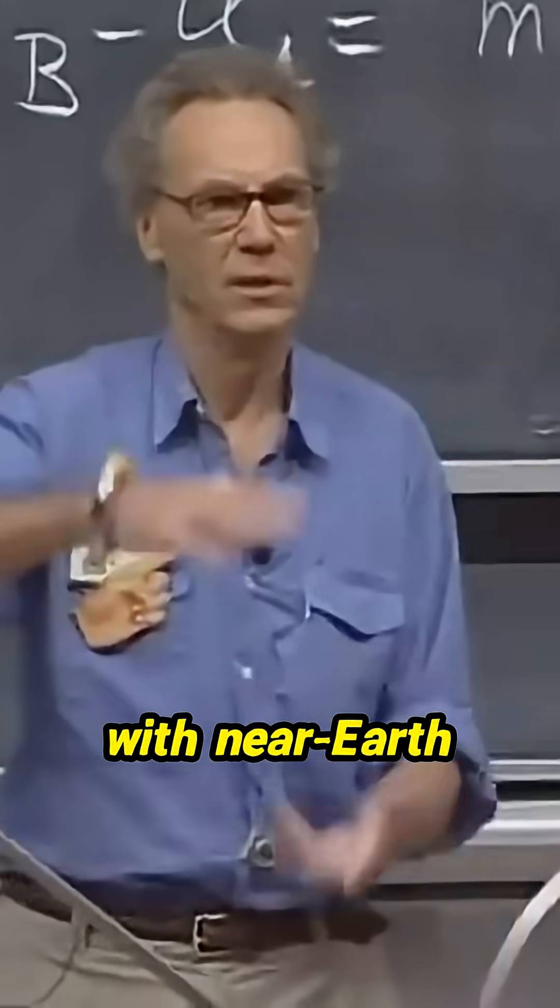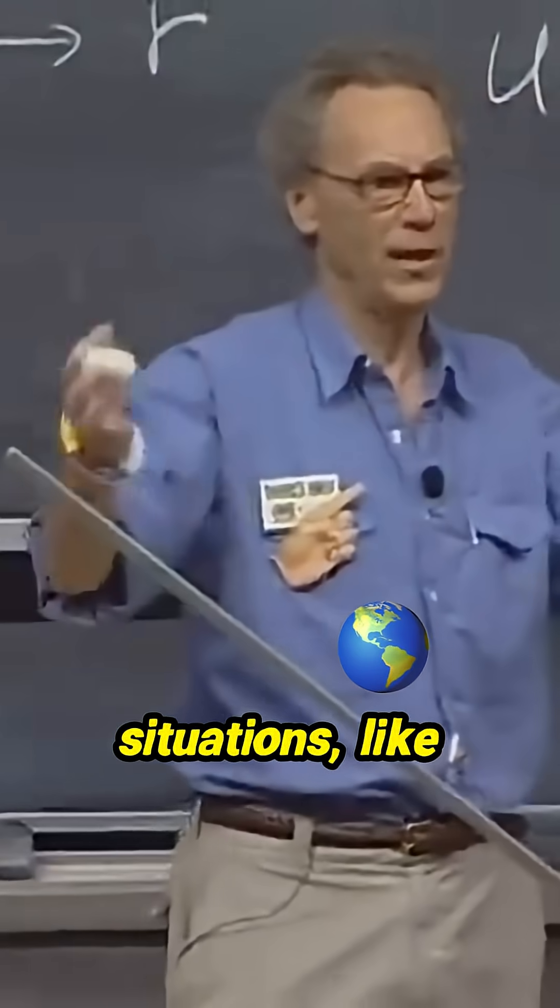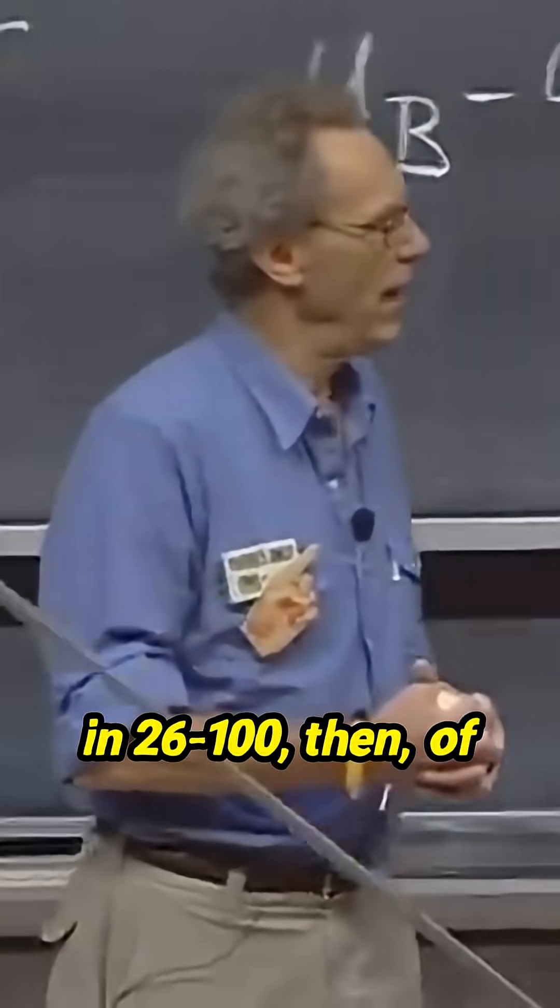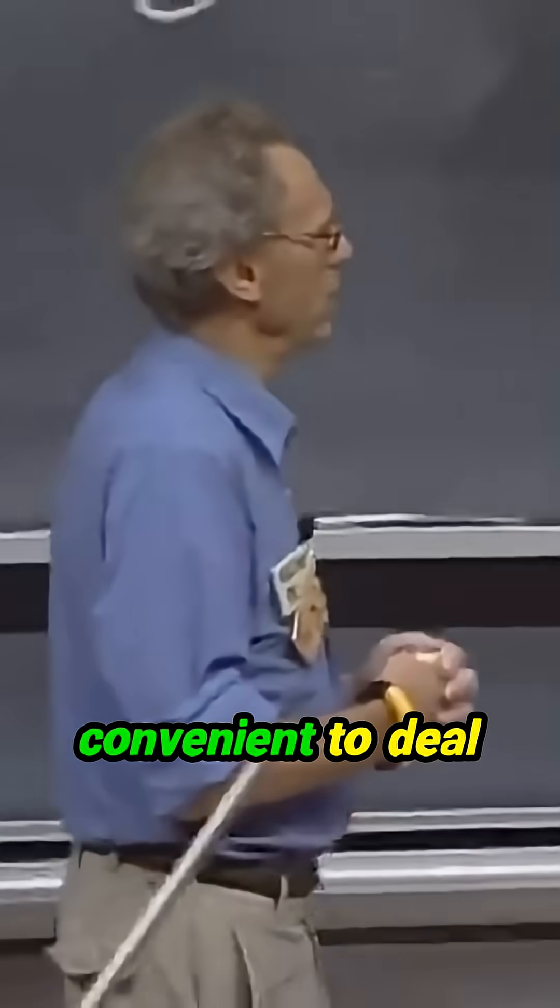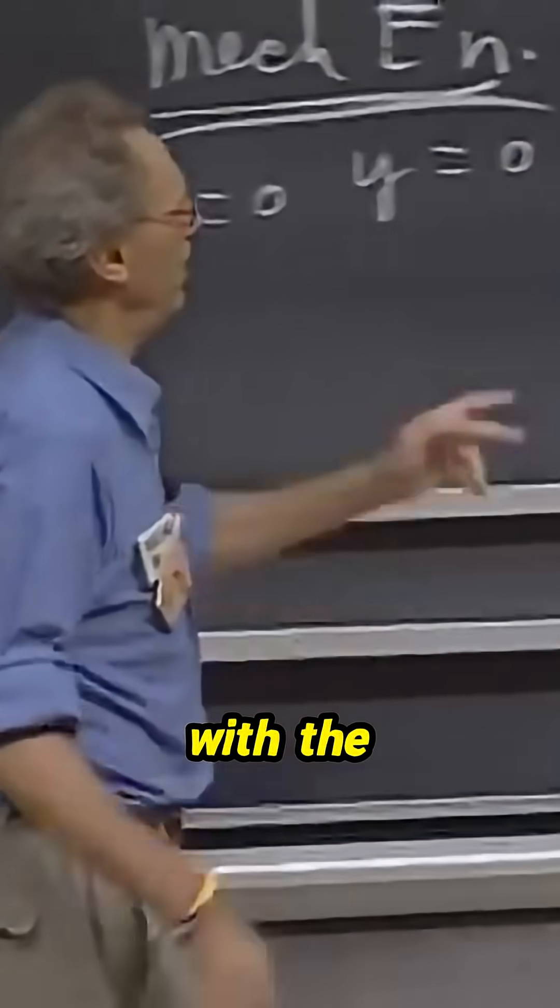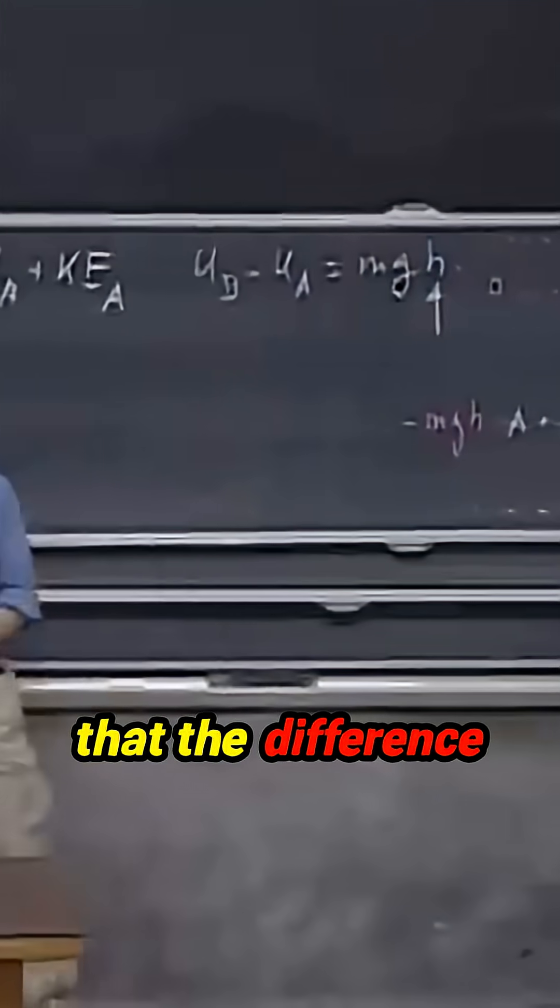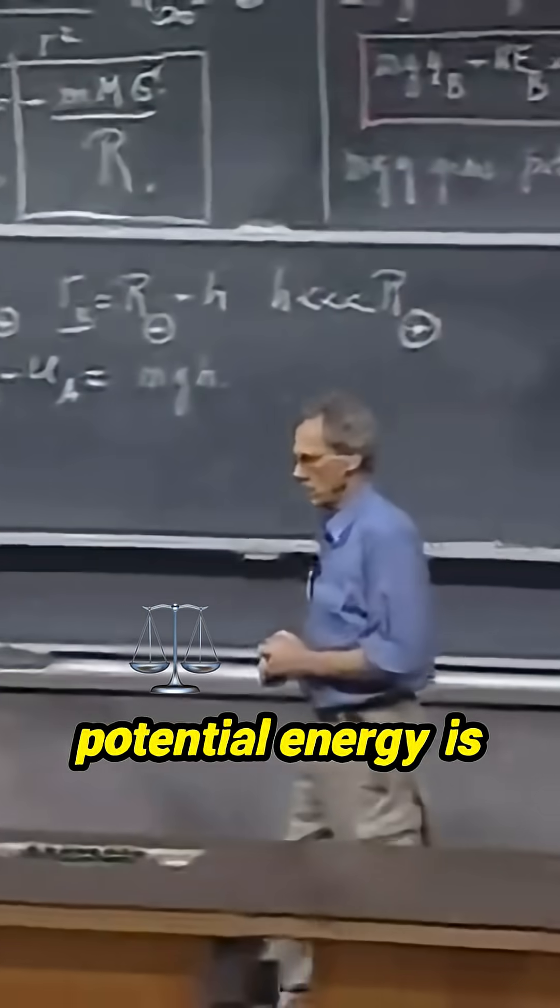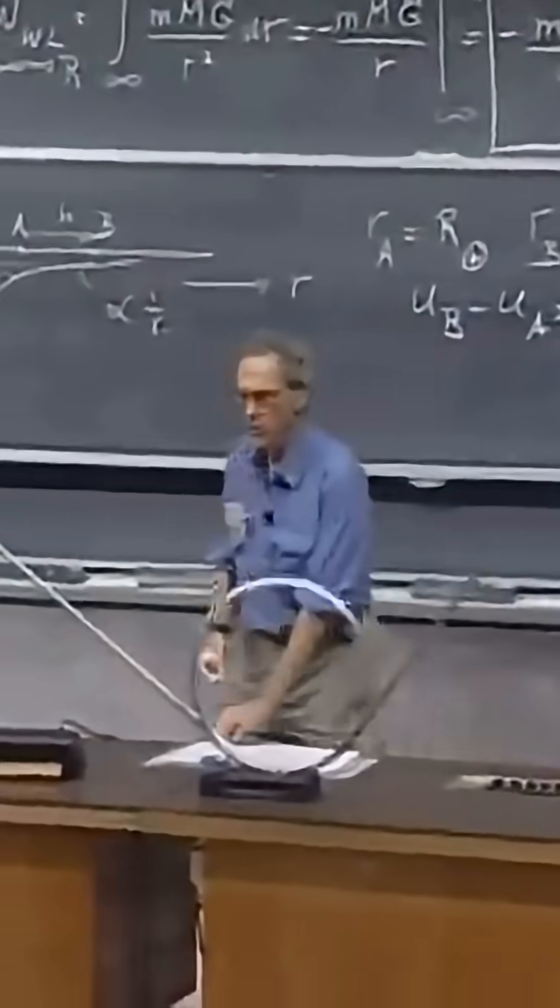But whenever we deal with near-Earth situations, like in 26-100, then, of course, it is way more convenient to deal with the simplification that the difference in gravitational potential energy is given by mgh.